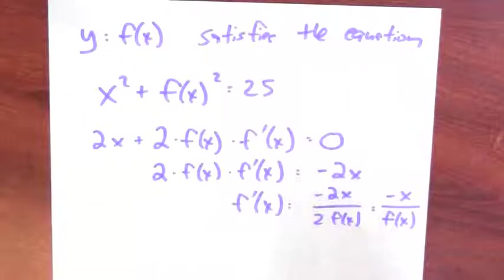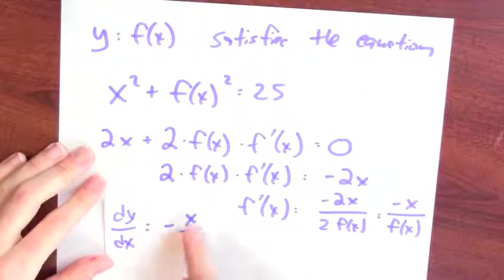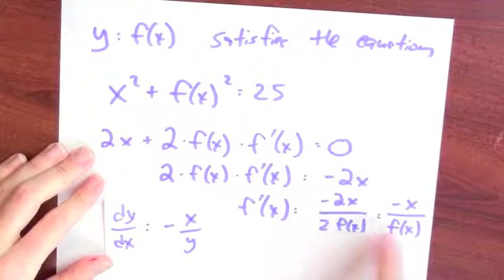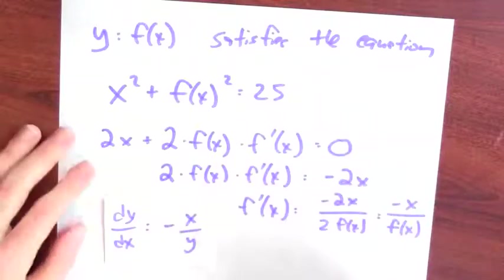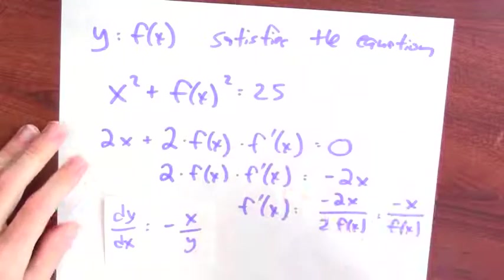It seems like a funny situation. The derivative depends on more than just x. It also has an f of x in it. Another way to say it is that the slope of the tangent line, dy dx, is negative x over y. Y is f of x. And it does really seem a little bit off-putting initially in these kinds of calculations that the slope of the tangent line depends on more than just x. It's negative x over y for this particular case.